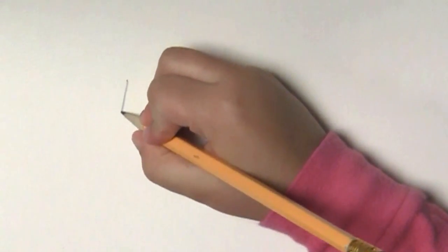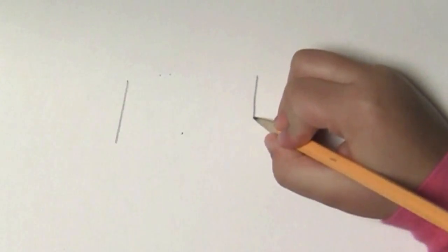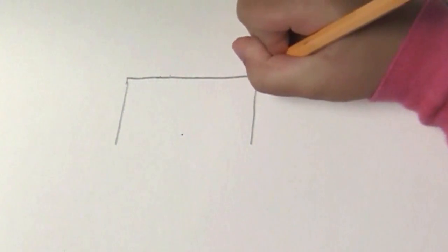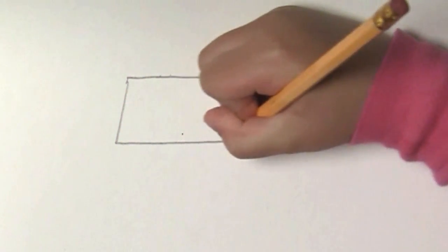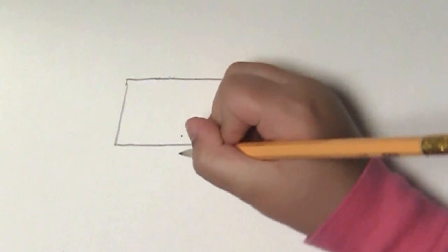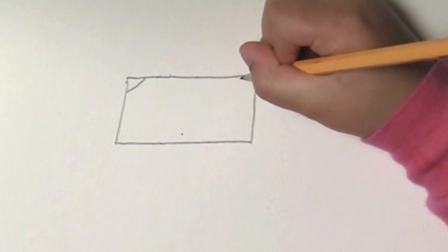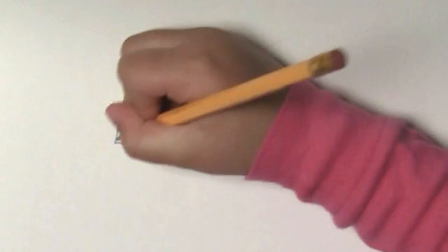So first you're going to draw two lines like this. Then you're going to connect them on the top. Like that. Then you're going to put little lines on the side to make it look like a real TV.